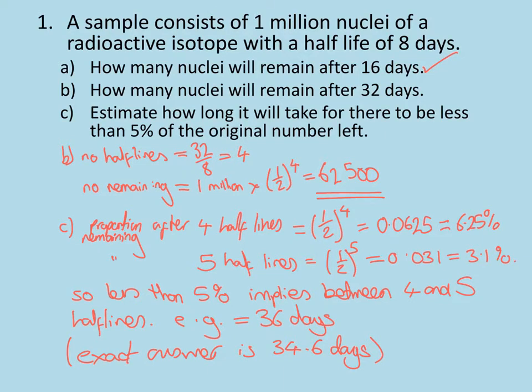In part B, it follows exactly the same pattern. We work out the number of half-lives as 32 days divided by the length of one half-life, which gives us four. The number remaining will be one million times a half to the power four, because it was four half-lives, which gives us 62,500.